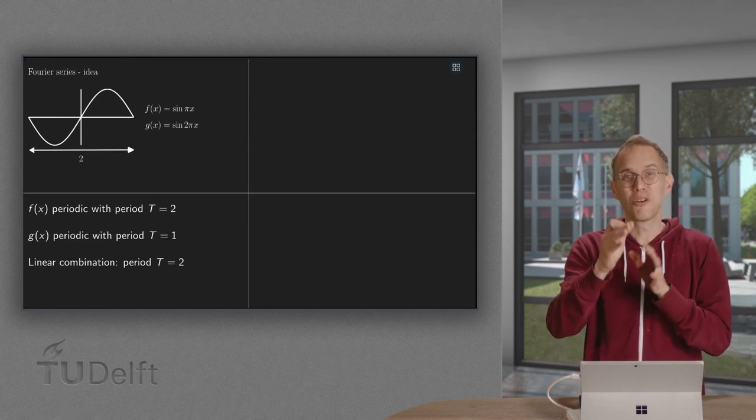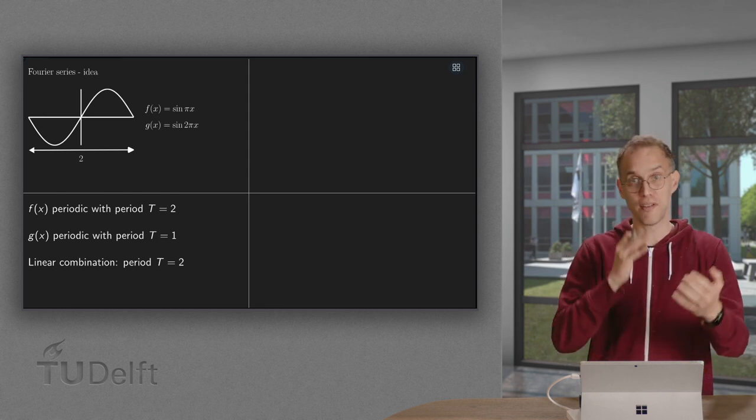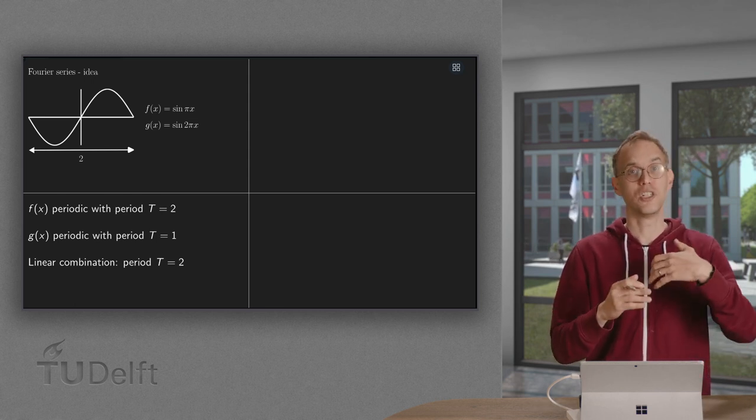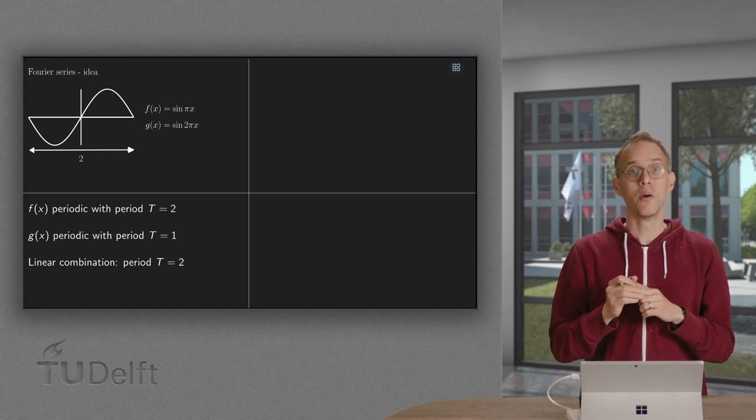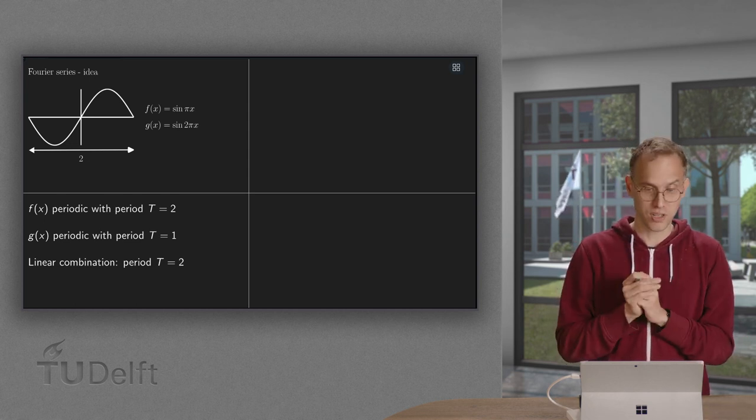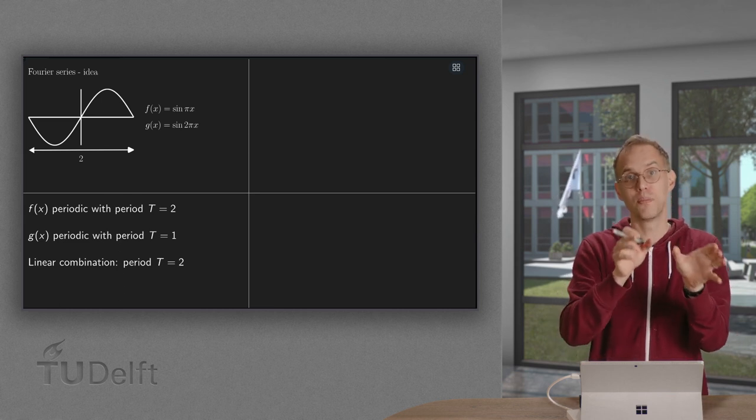Now, if we take any combination of these, of f and g, we have a combination of a function with period 2 and a function with period 1. Well, the function with period 1 will also be periodic.